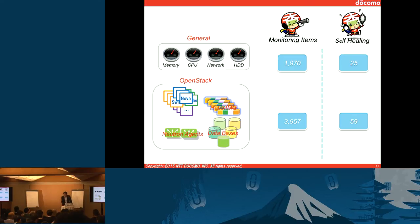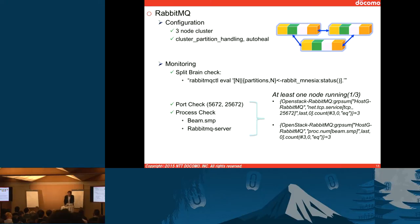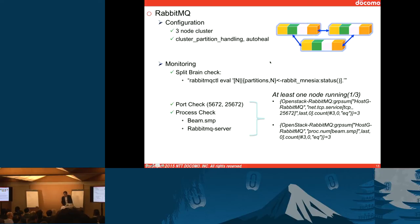Let me pick two examples. One is RabbitMQ. We are using a three-node cluster and allow partitioning by setting alt key. In this setup, Zabbix keeps watching whether there is split-braining by using these parameters, and we keep checking the port and the process. At least we need to keep running one node, so Zabbix is checking whether there is one active node for the API check and process check.